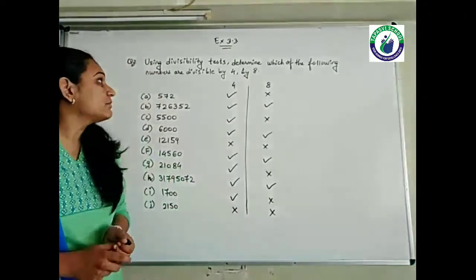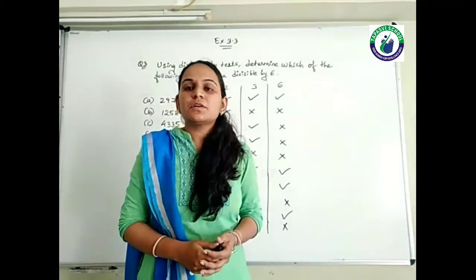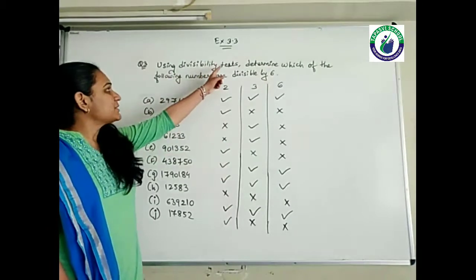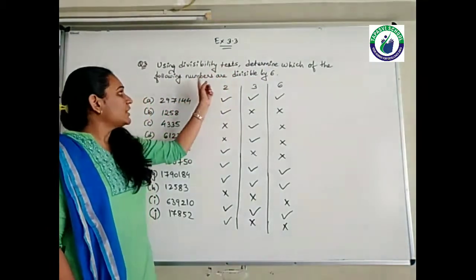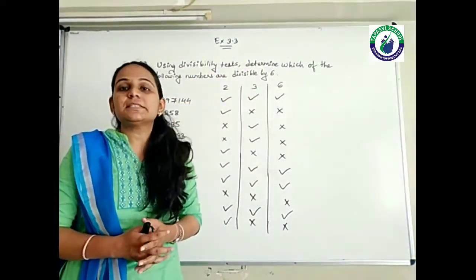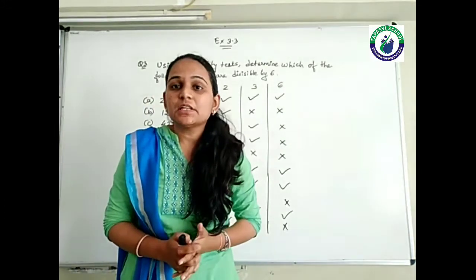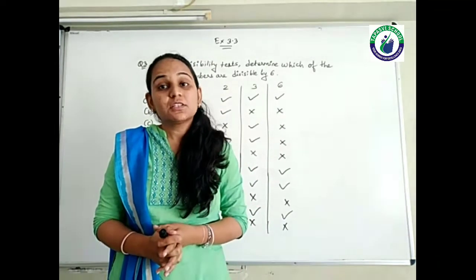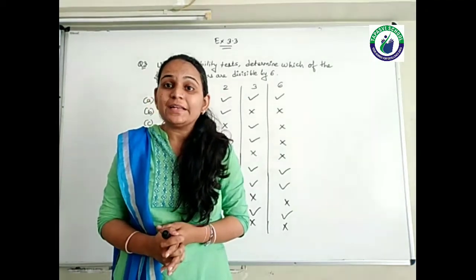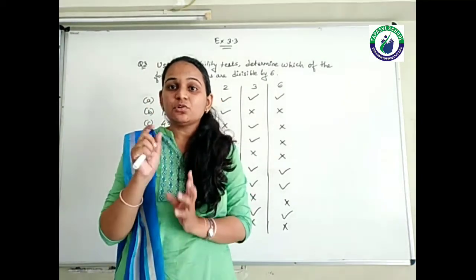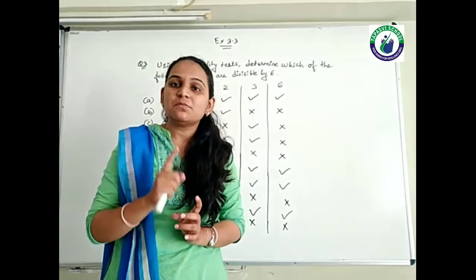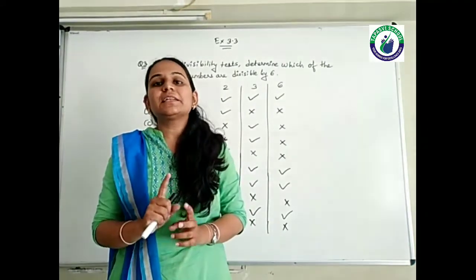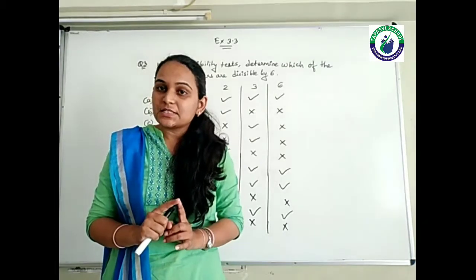This is for question number 2, students. Now see question number 3: using the divisibility test, which of the following numbers are divisible by 6? To check whether the number is divisible by 6 or not, first we need to see whether the number is divisible by 2 and 3, both.